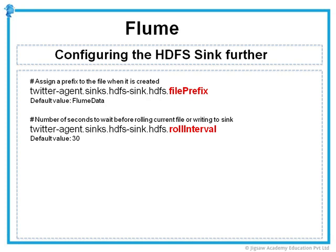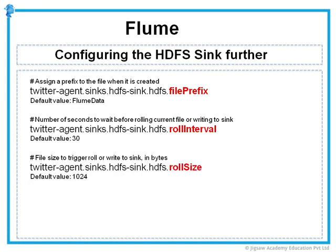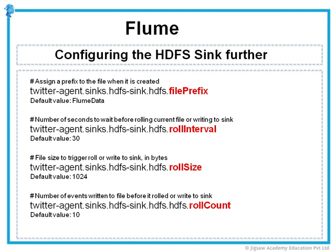When the flume agent is running, you would have noticed a .tmp file being generated, and after some time a log entry saying the file has been renamed — that is what is happening. In case you want to write events based on the size of the file, set the roll size property — the value is in bytes. If you do not want to roll based on size, set it to zero; by default this is set to one kilobyte. And finally, if you want to write based on the number of events, set the roll count property. Whatever value you set, it will wait for that many events before the file is rolled off to the sink. By default the number of events is 10, and to disable rolling by count, set the property to zero.